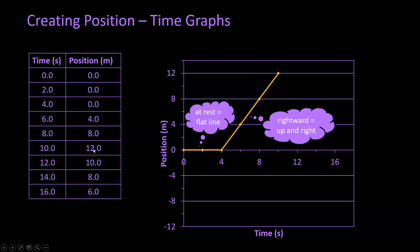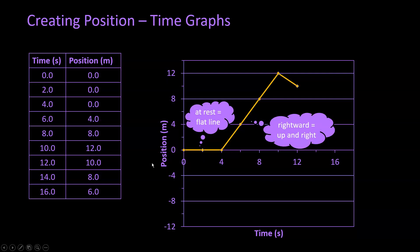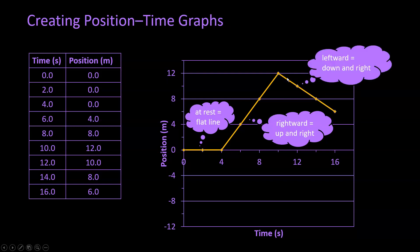We've plotted those points. And now, notice as we move to 12 seconds, it is changing directions and moving back towards the origin. But before we plot those points, let's notice that when we have a rightward motion, the line is going to go up and to the right. Let's plot the rest of our data points. Notice that when we have an object moving leftward, the line is going to be down and to the right.